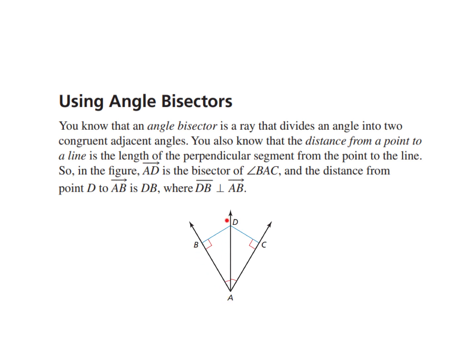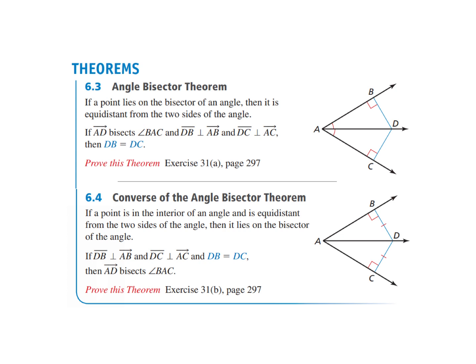Angle BAD is congruent to angle CAD. If we have a point D on that ray, then the distance from D to ray AB is distance DB, and DB creates a perpendicular segment with ray AB. This gives us the angle bisector theorem, which says if a point lies on the bisector of an angle, then it's going to be equidistant to the two sides.